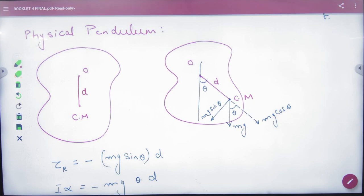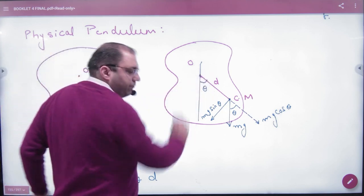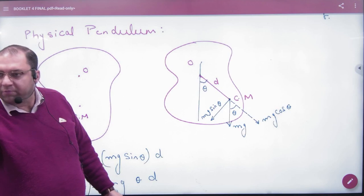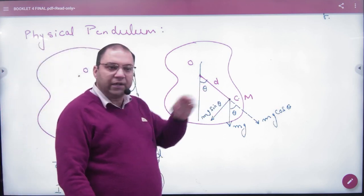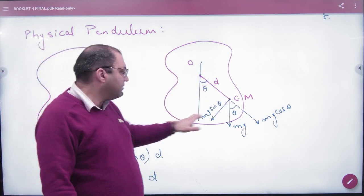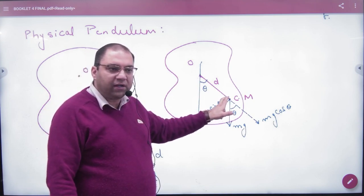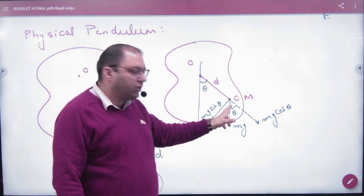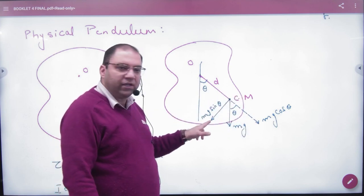A little displace it. A simple pendulum is this displacement here. Angle of theta. The center of mass is here. Weight is Mg. Theta corresponding, Mg cos theta, Mg sin theta.